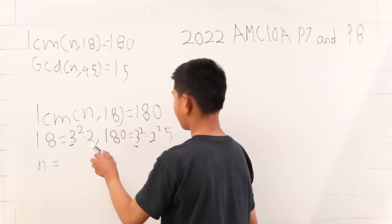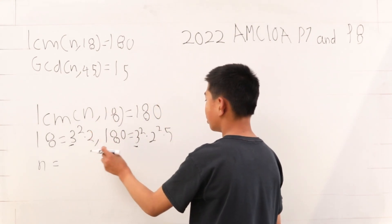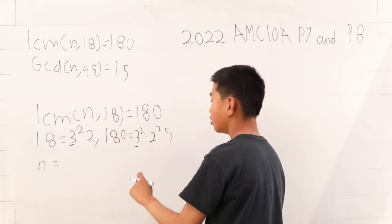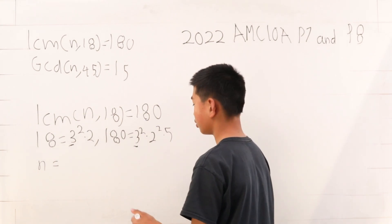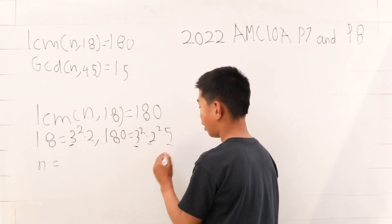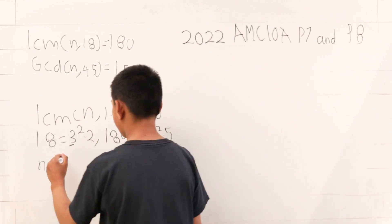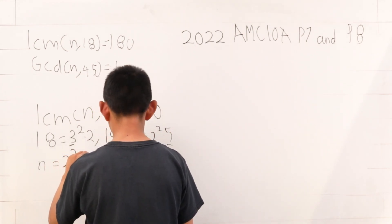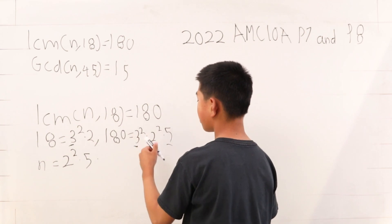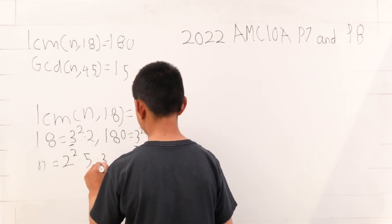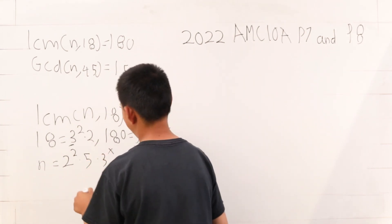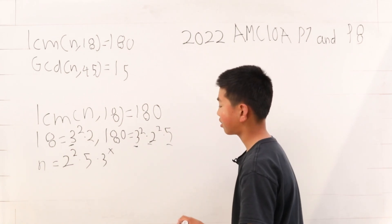We see that in the number 18 there's only a 2, not a 2 squared and a 5. So we already know two digits that multiply to n: 2 squared and 5, because that's the only place they could have come from. 2 squared times 5 times, well, there has to be a 3 term here. So let's put 3 to the x power and we'll solve for x later.